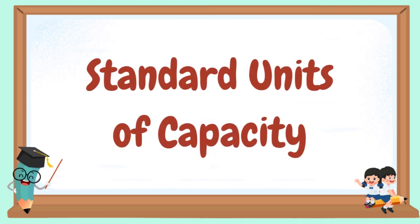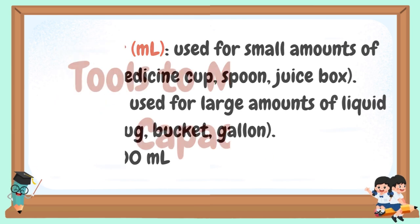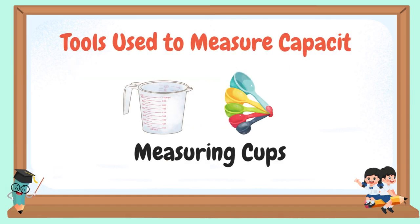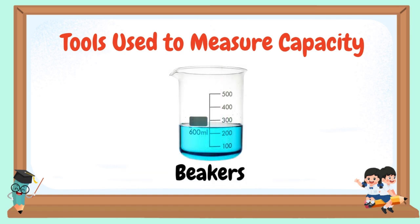Standard units of capacity: milliliters, used for small amounts of liquid; liters, used for large amounts of liquid. One liter is equivalent to 1,000 milliliters. Tools to measure capacity: measuring cups, graduated cylinders, and beakers.